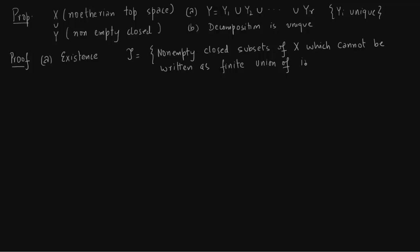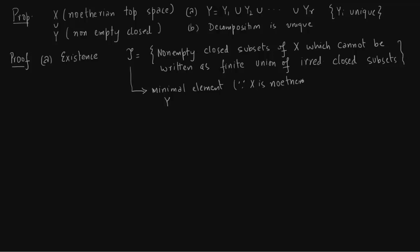The key idea is that set S will have a minimal element, precisely because X is a Noetherian topological space. In a Noetherian space, any decreasing sequence of closed subsets stabilizes; correspondingly the sequence of ideals (with reverse inclusion signs) also stabilizes in a Noetherian ring. We call this minimal element Y — if you have seen the Wikipedia definition you will understand why such a minimal element exists.